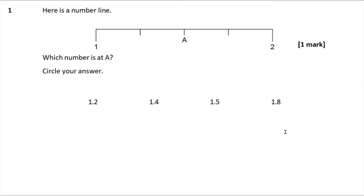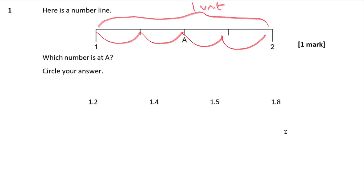Question 1 — here is a number line. Which number is A? We can see that the span of this particular scale spans one unit, going from one up to two. That one unit is divided into one, two, three, four steps, so each step is one quarter. So the positions are one and a quarter, one and a half, one and three quarters, and two. A is at one and a half, which is the same as 1.5.